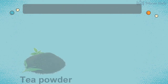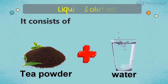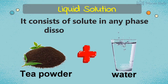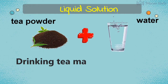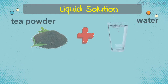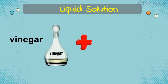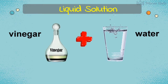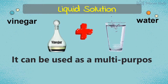Next is liquid solution, which consists of a solute in any phase dissolved in a liquid. Making a tea beverage is an example — drinking tea is beneficial and may help improve your health. Another example is the mixture of vinegar and water, which can be used as a multi-purpose cleaner.